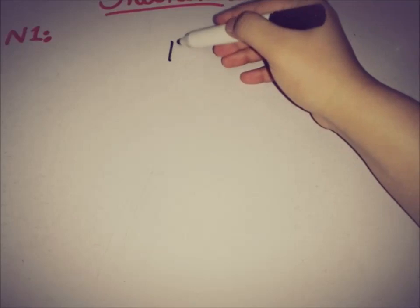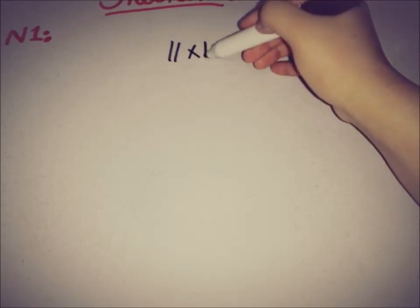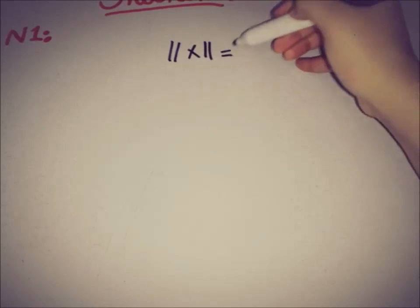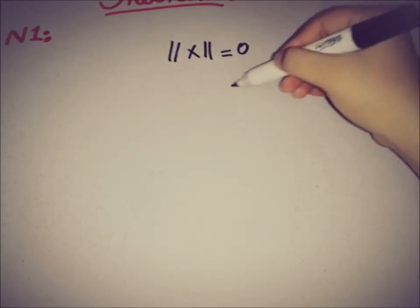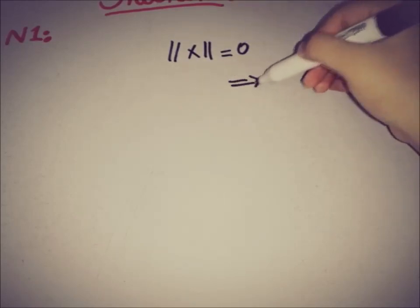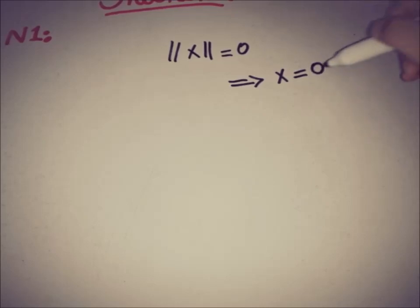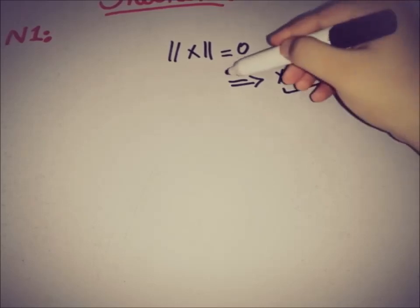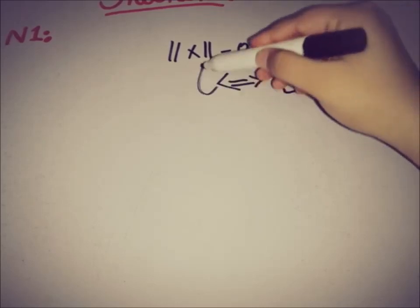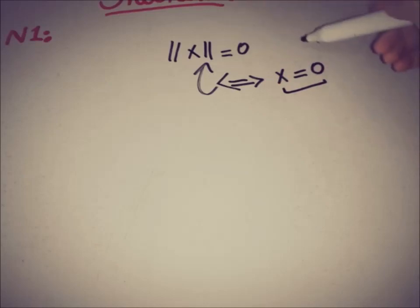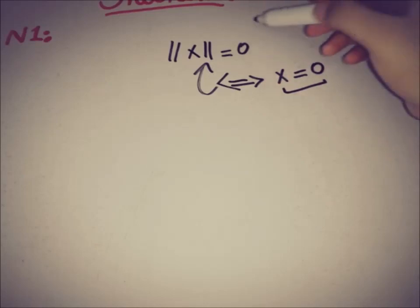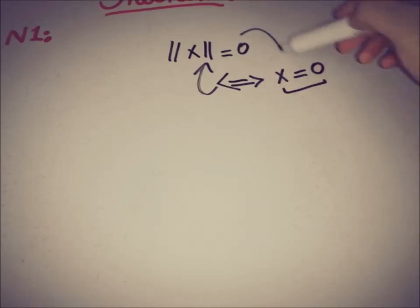The first property of the norm states that if the norm of an element is equal to zero, this implies the element itself is equal to zero, and if the element is equal to zero, this implies the norm is equal to zero. We will now verify whether this definition holds for our relation.